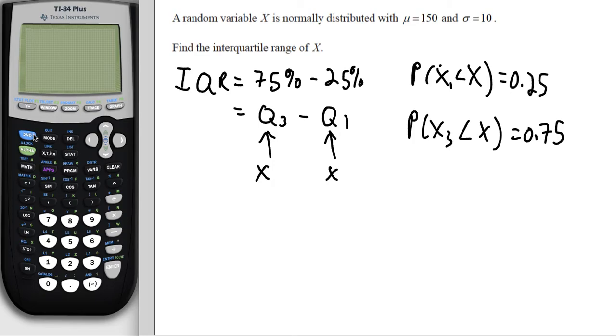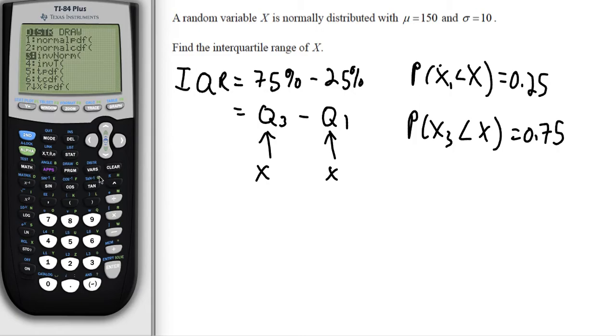So what we're going to do is go into our distribution on the calculator. That's second VARS, and we want inverse normal. We're going to say area - so this is what percent of the data is below, or what percent of the data are we looking at. In this case, we're looking at 25%, so that's 0.25 we put in there. We know that the mean is 150, that's given, just as the standard deviation is also given, that is 10. So we put this in and we see what x value corresponds with 25% of the data.